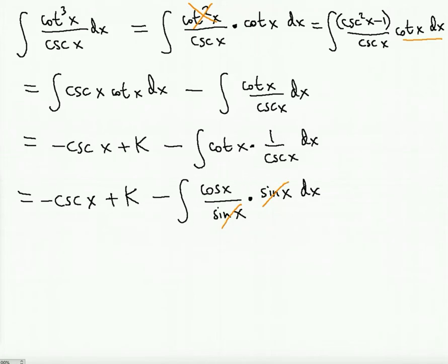So we happen to have a very easy way out here, not like we expected originally. As a result, this is negative cosecant x and then we just have cosine, cosine x dx. The antiderivative of cosine is sine. So minus sine x and I'm not going to write the arbitrary k because now we have another arbitrary constant.